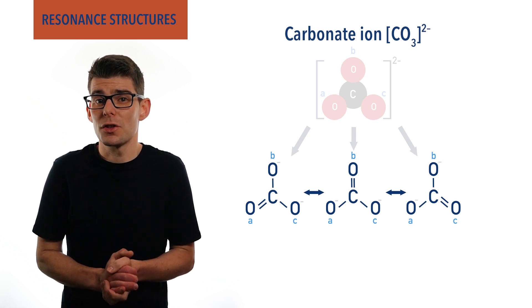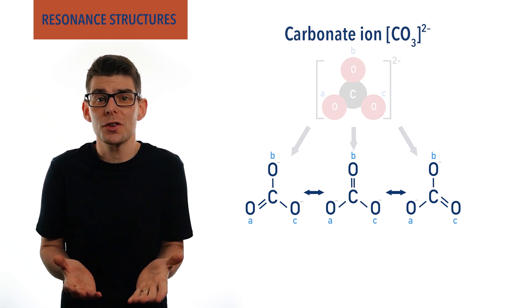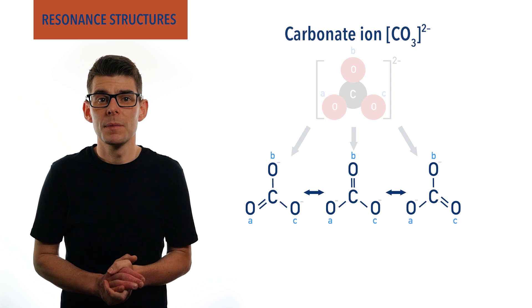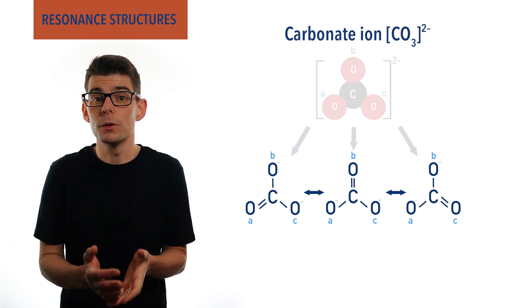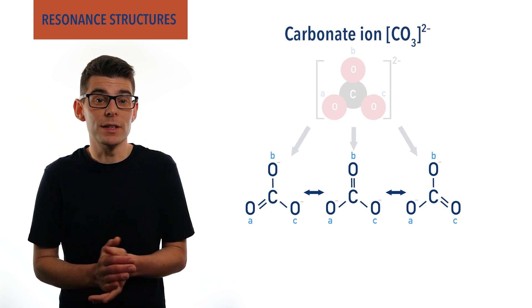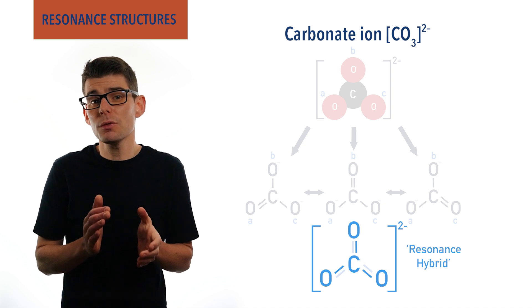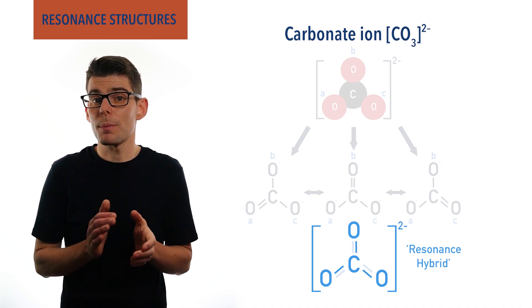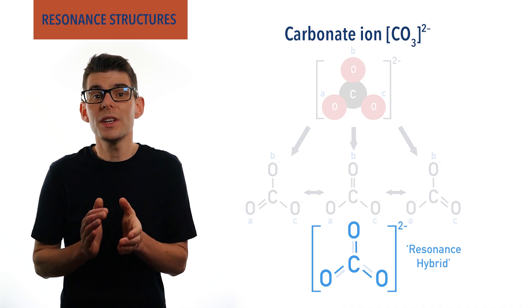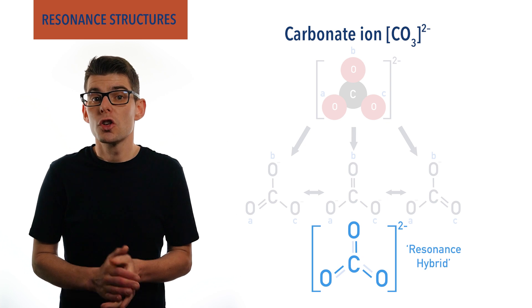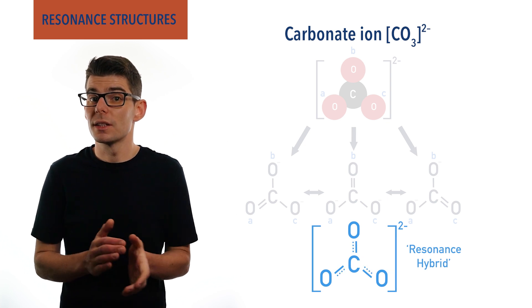None of these resonance structures is actually the correct structure of a carbonate ion, but each one contributes to the true structure, the resonance hybrid. As a result, it is more accurate to represent the carbonate ion with a delocalized charge, showing dotted lines alongside the single bonds.